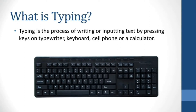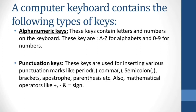First you should know what typing is. Typing is the process of writing or inputting text by pressing keys on a typewriter, keyboard, cell phone, or a calculator. In this video we will be learning mainly about computer keyboard. A computer keyboard contains alphanumeric keys, which include letters and numbers — A to Z for alphabets and 0 to 9 for numbers.